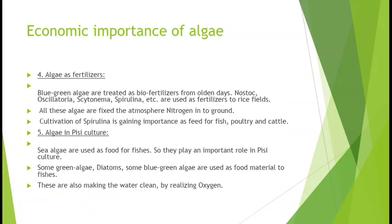Jab ye nitrogen ka fixation karti hain, to directly aur indirectly yah nitrogen chaawal ke plants ko prapt hoti hai aur chaawal ke kheton mein upaj badhti hai. Nostoc, Oscillatoria, Cytonema, Spirulina, Anabaena aadi are used as bio-fertilizers to rice fields. In algae mein 'Heterocyst' namaak special cell paaye jaate hain jinka main function hota hai atmospheric nitrogen ko fix karna.